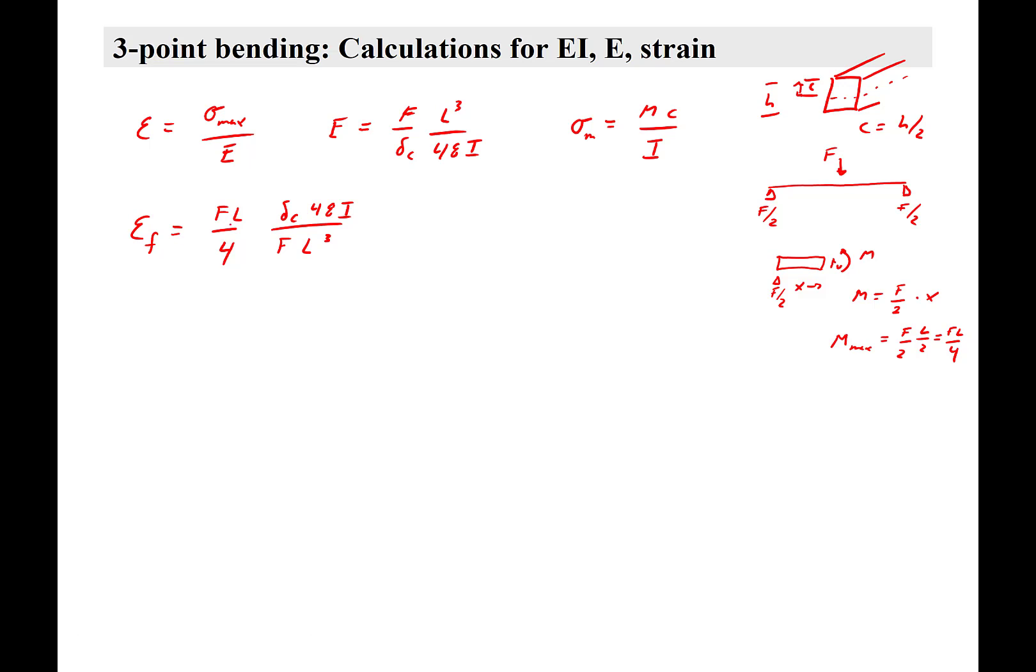So, the stress again was the moment F L over 4, times C over I, and the I's cancel, one of the L's cancels, and the F's cancel.